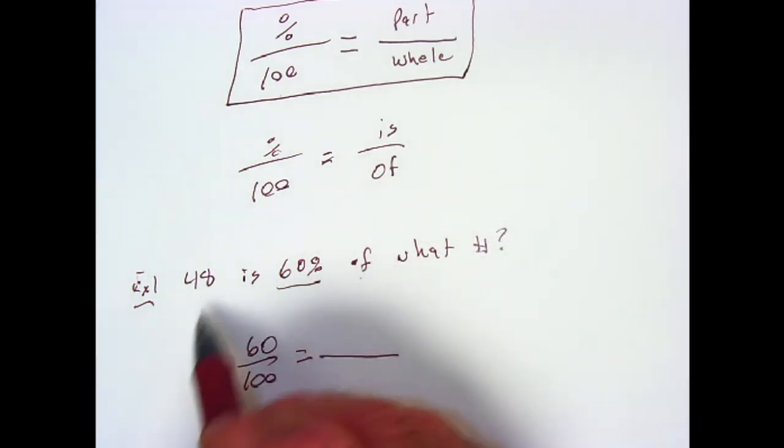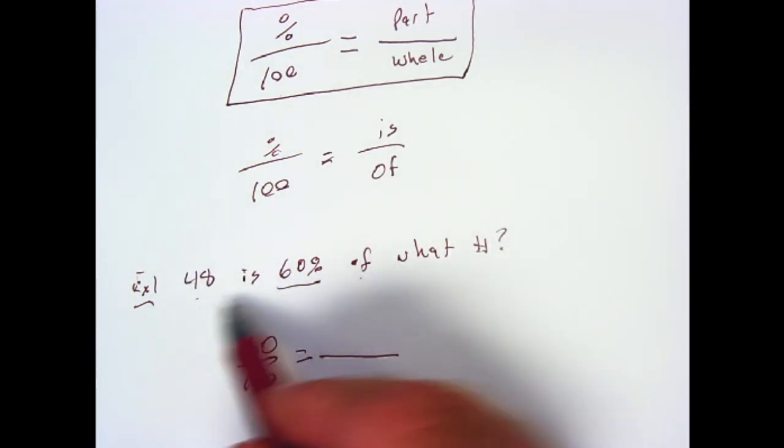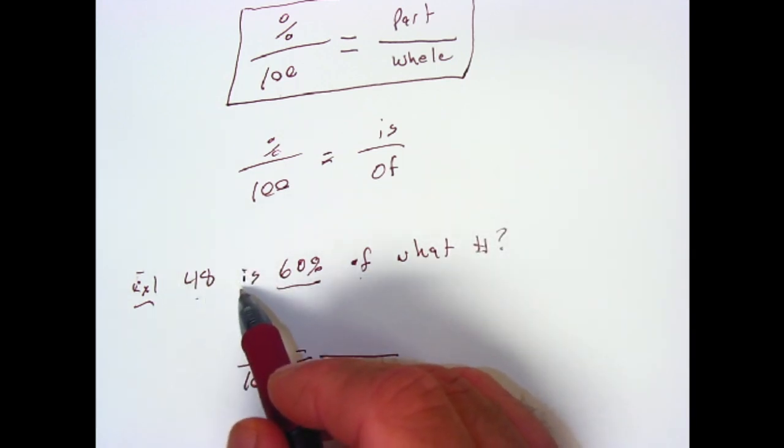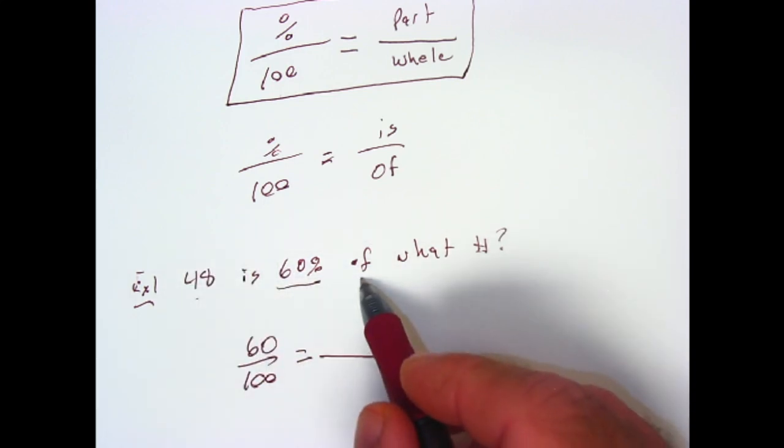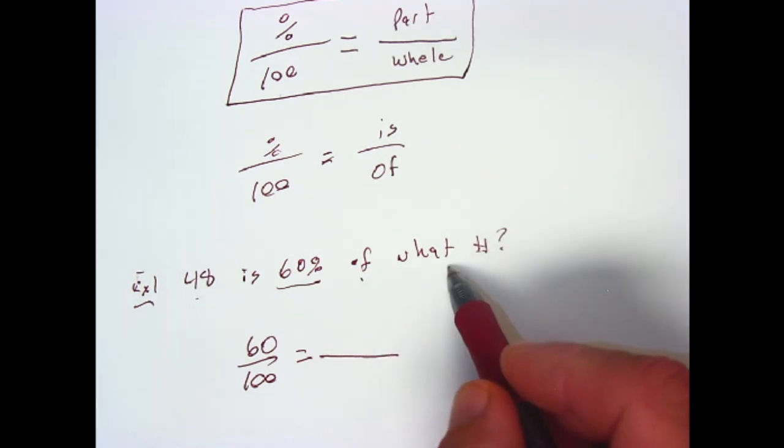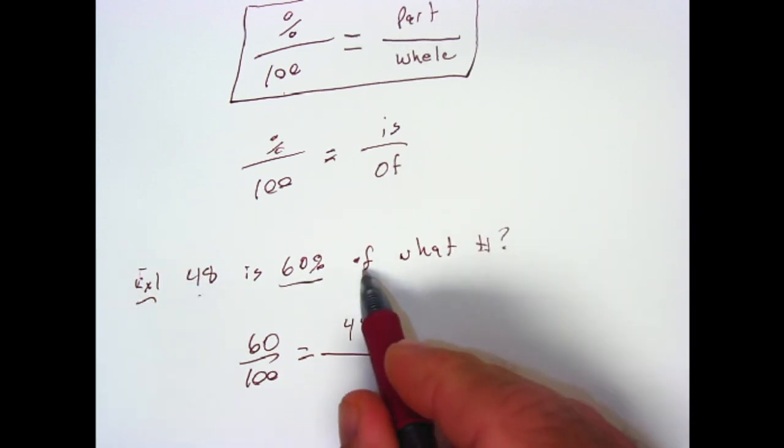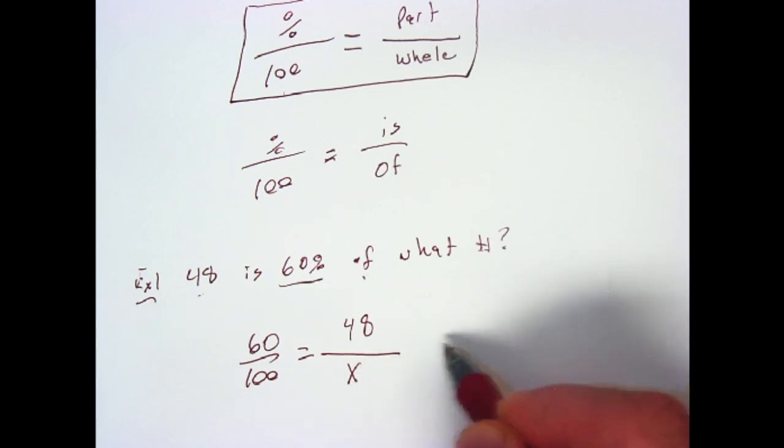Here's where people do the is over of thing. In general, the number closest to is, it can be before or after is, but close to it, this is your part. And then it will say of what, or of a number. The number after of is going to wind up being the whole. So the is is going to be 48 of what? When we don't know, we say x.